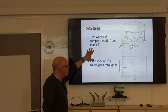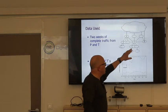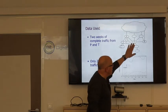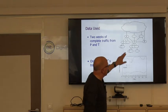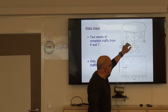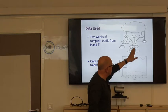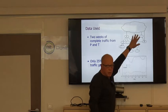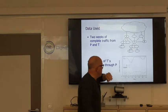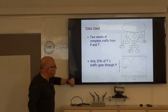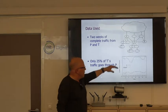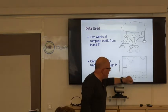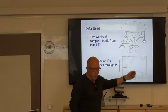Once we make this assumption that the matrix is low rank, it becomes possible to infer this guy. We're going to be able to infer the volume of traffic flowing through a network without measuring it. Here's the measurement setup. We took two weeks of complete traffic from two real ISPs. Each ISP has lots of customer networks. Only about 25% of T's traffic is going through P.